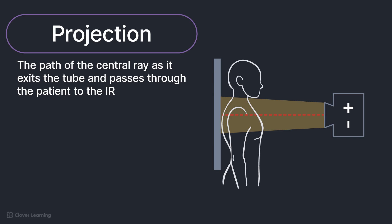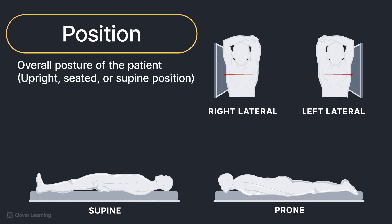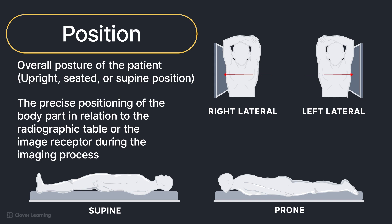In radiology, the term position has dual meanings. It encompasses the overall posture or general body position of the patient, including upright, seated, or supine positions. Additionally, position signifies the precise positioning of the body part in relation to the radiographic table or image receptor during the imaging process. This relationship to the radiographic table or image receptor is also termed radiographic position and includes positions such as lateral, decubitus, and oblique. Radiographic positions will also be discussed in depth in a separate lesson.